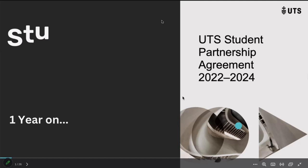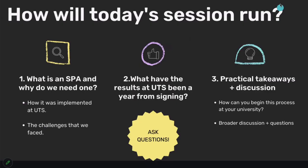I was previously the general secretary of the student association and now I'm on our academic board as the student member representative for law. I'll start off with what an SPA is — a student partnership agreement — and why you might need one in the context of your university. I'll go through how it was implemented at UTS, some of the challenges we faced, and the results a year after officially signing the SPA, including accountability, implementation, practical takeaways, and broader discussion.